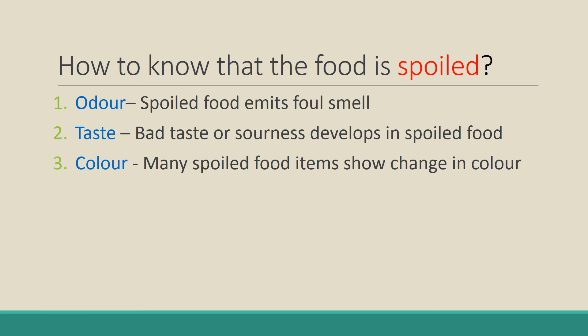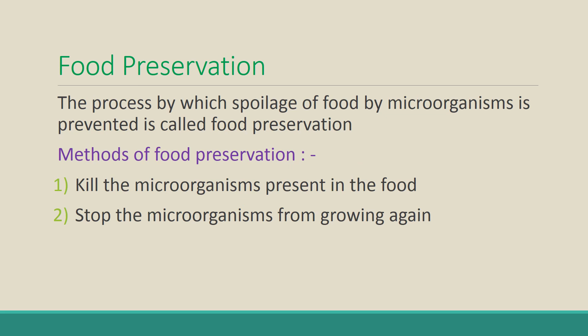How do you know that food is spoiled? There are three signs. First, spoiled food emits a foul smell. Second, the taste of spoiled food is very bad, or sourness develops. Third, the color of the spoiled food may change. These are three simple ways to know the food is spoiled. And if food is getting spoiled by oxidation or microbes, how can we preserve food for a longer duration?